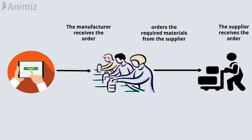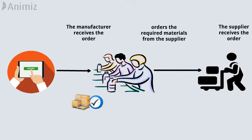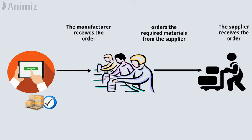The manufacturer converts the materials into the product ordered, fulfills the order, and eventually the customer receives the product.